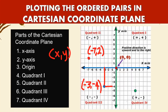The third point is in quadrant four, where x is positive and y is negative. Your x is positive five, and your y is negative five. So your coordinate is five, negative five.